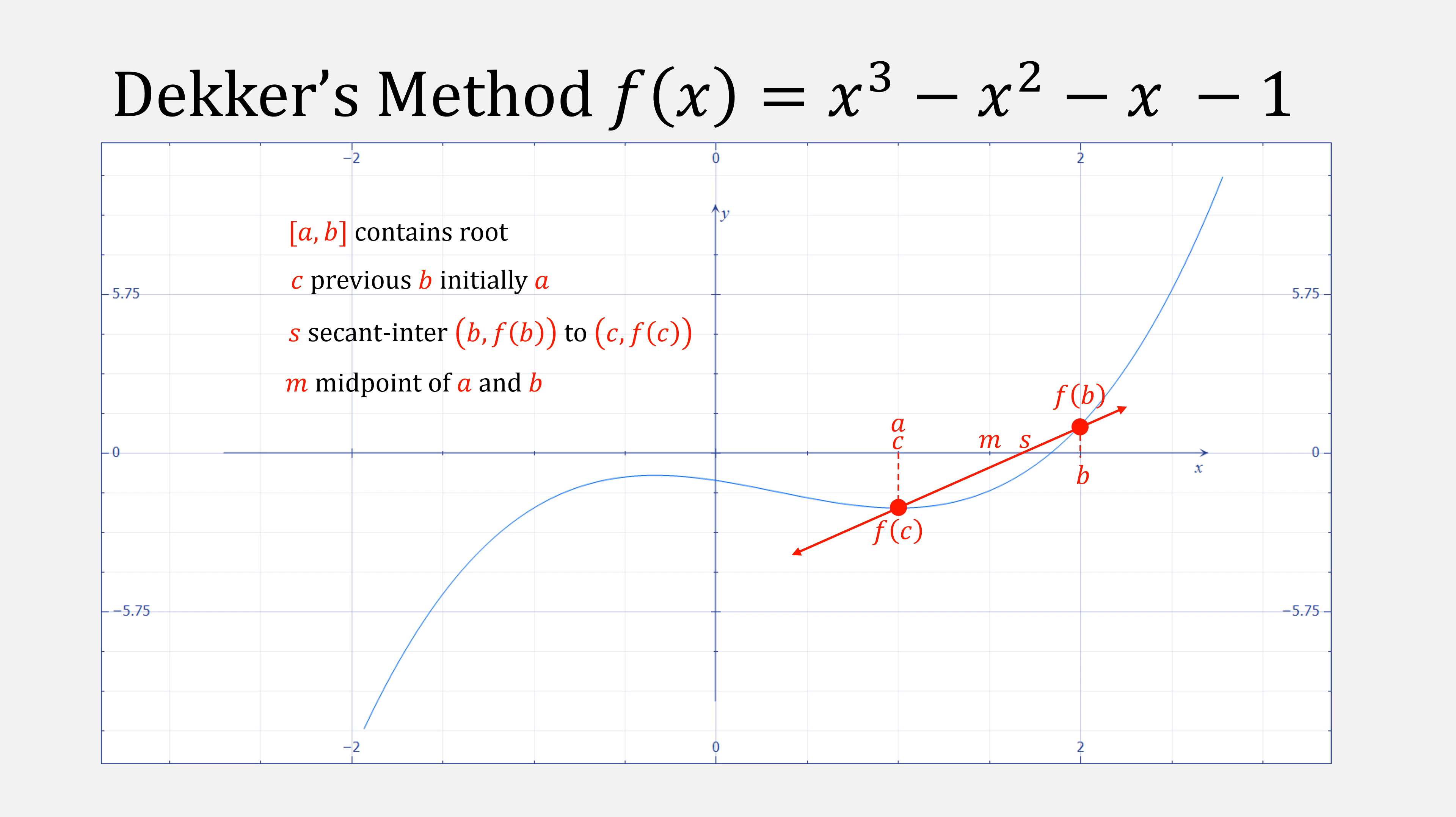Let's go back to our example. Here, s is between m and b. This is our first case, so we use secant method and update the value of b to be the value of s. Then regardless, we make our new c the old value of b. Now we have to check signs. If the sign of our function at a matches the sign of our function at our new b, this means that a and b no longer contains our root. So we update the value of a to be the old value of b. Afterward, we start the process all over.